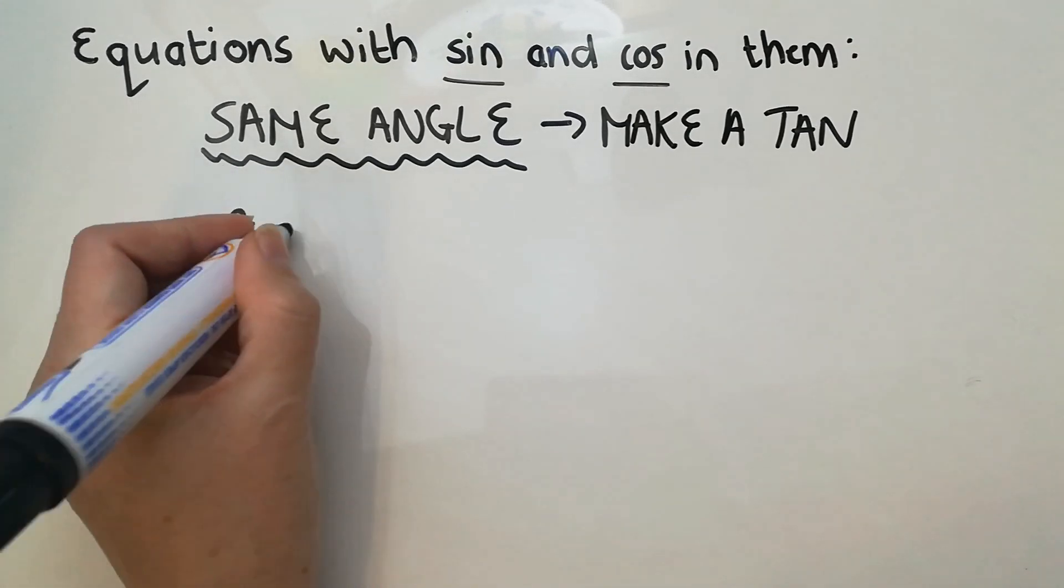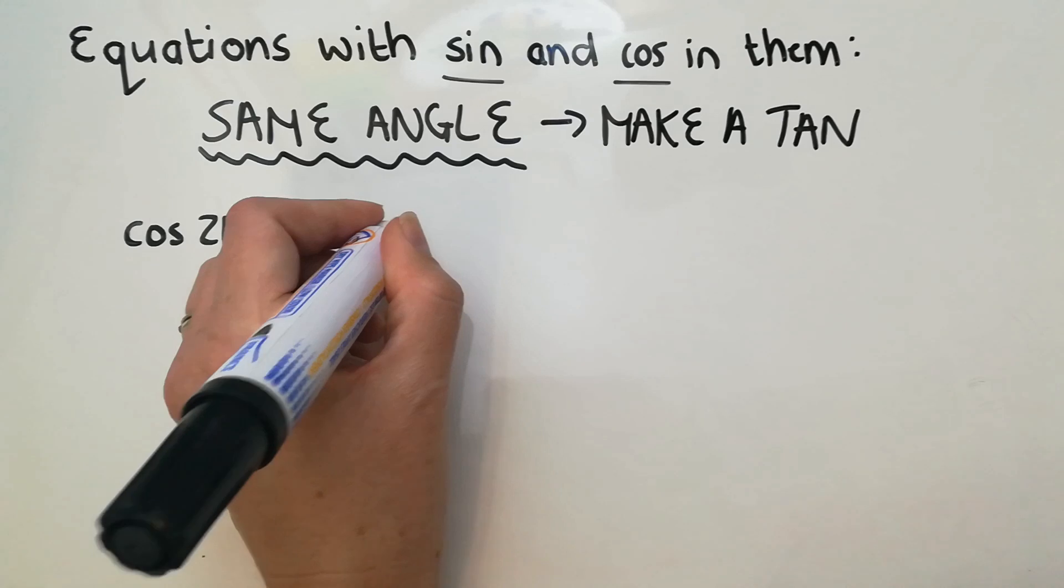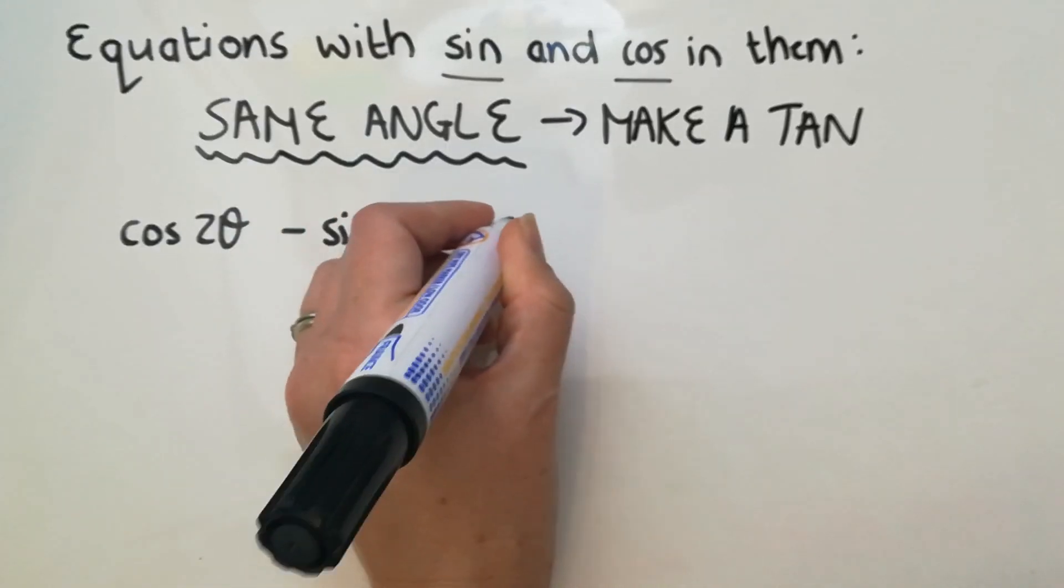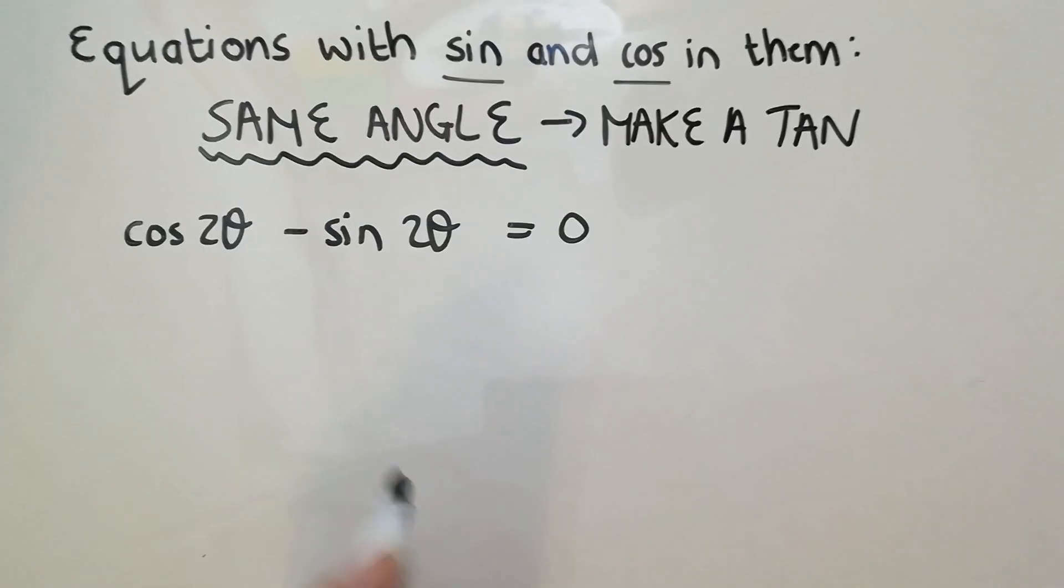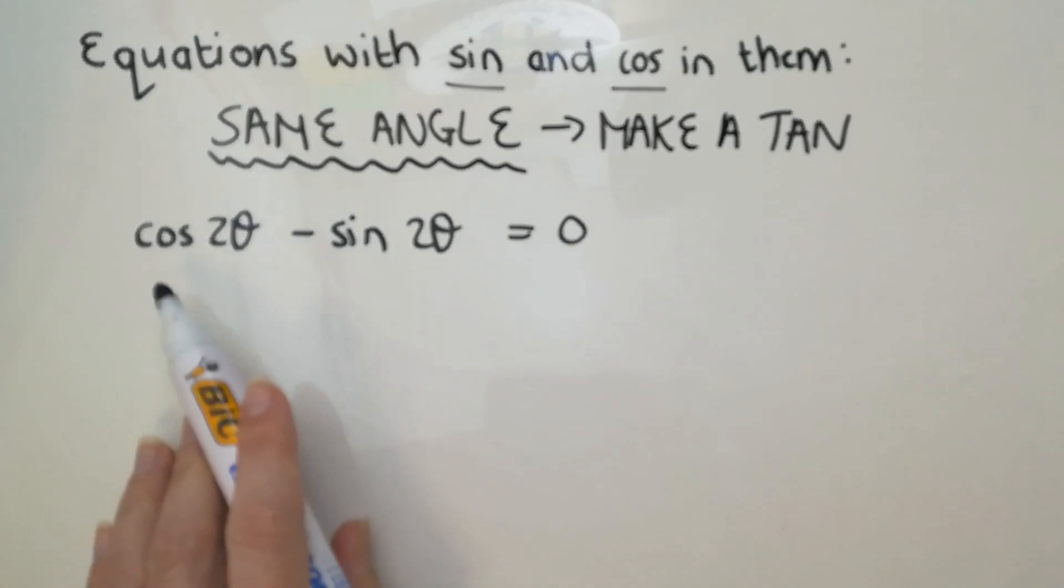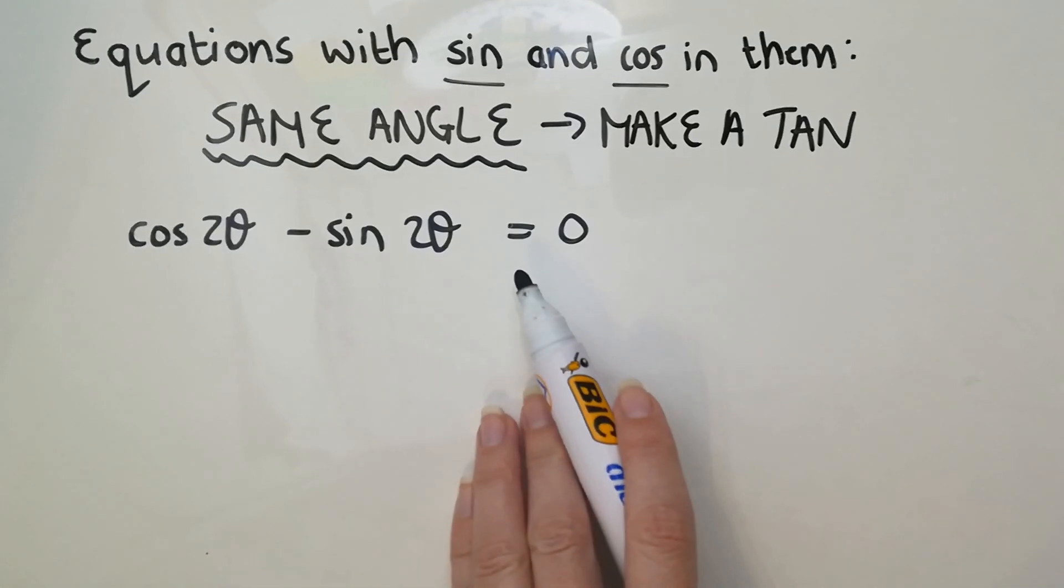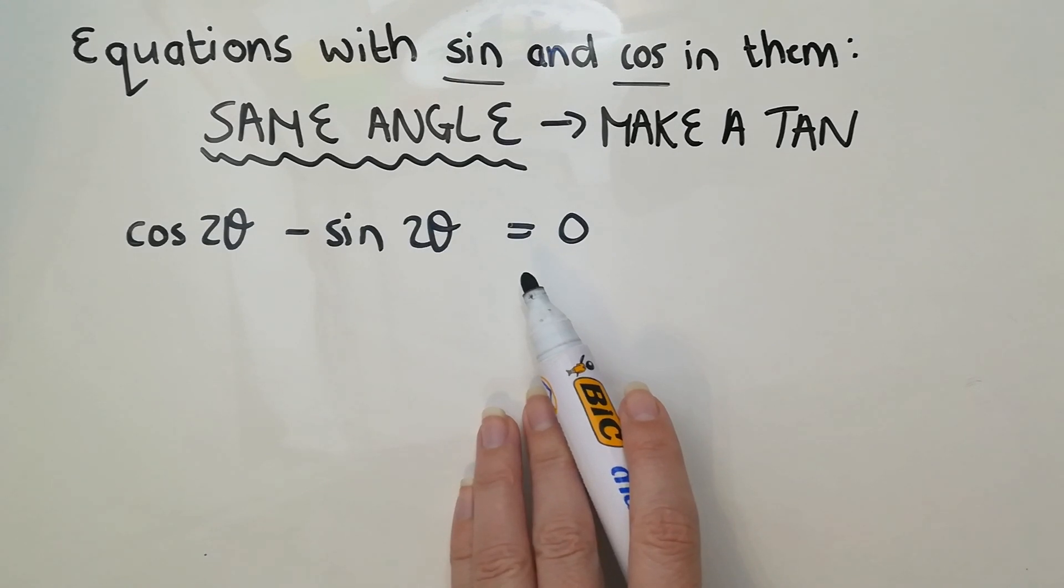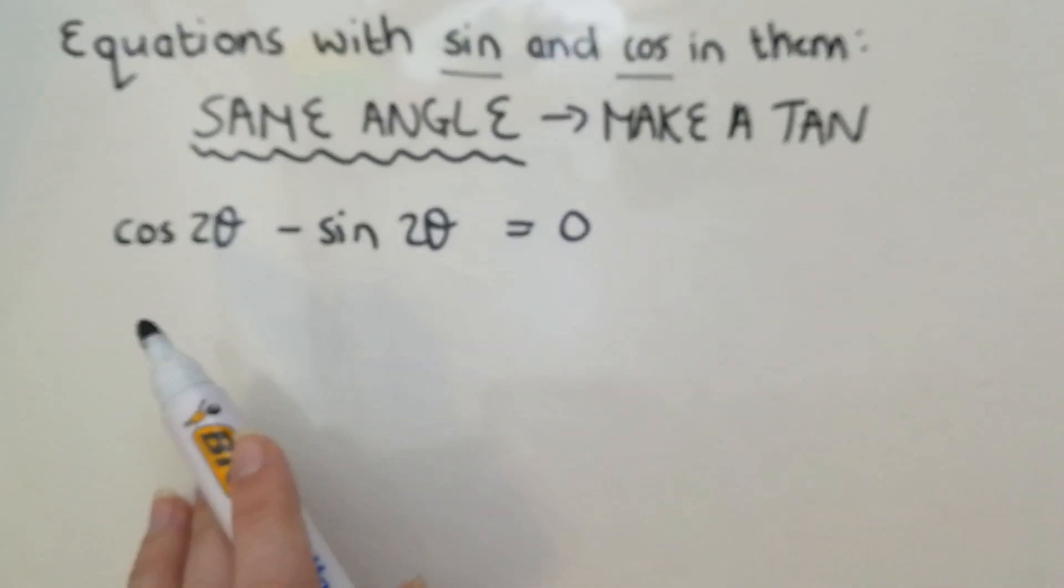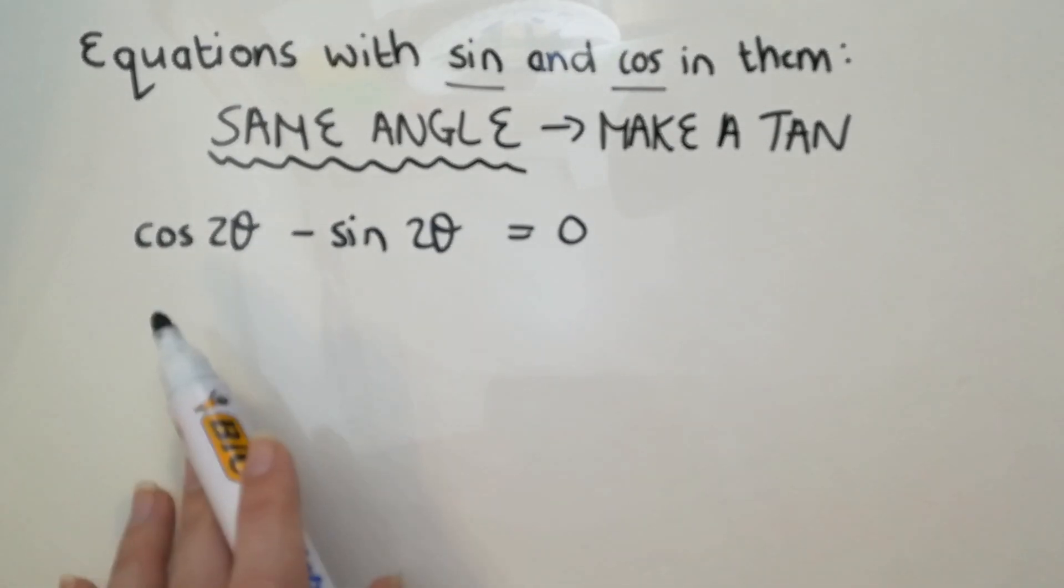This is an example of one where you are going to make a tan, and I'll explain why. So check number one, there's a cos and a sine in the same question. It is an equation because there's the equals. And then what's going to happen is you're going to recognize there's really nothing you can do here.